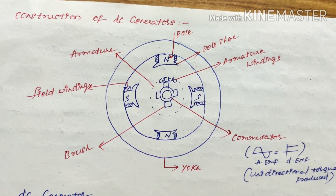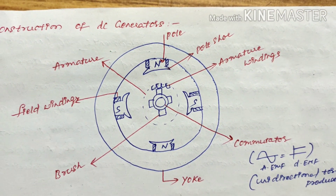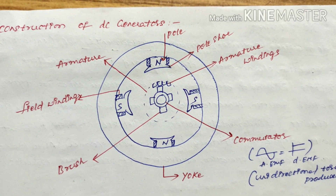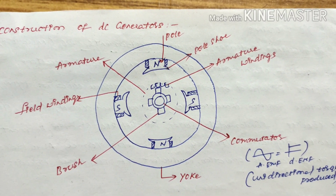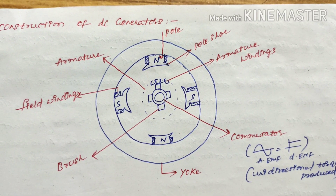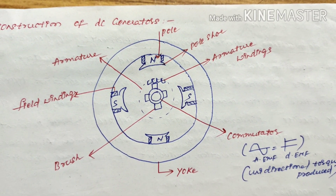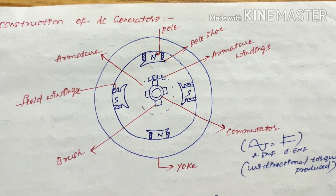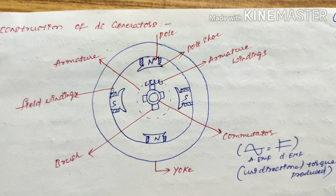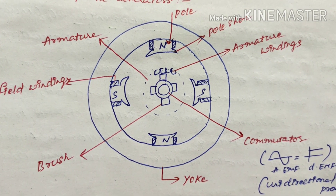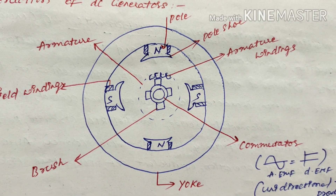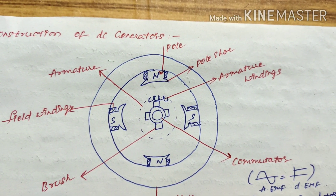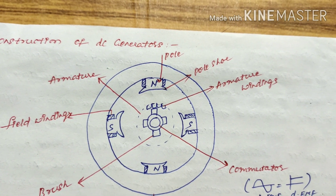The armature has two parts: armature core and armature slots. Armature core is used for reducing eddy current losses and is made up of soft iron lamination of 0.4 to 0.6 mm. Armature slots contain insulating conductors that are connected, and EMF gets induced here. The slots use insulating materials to protect the device from other losses.